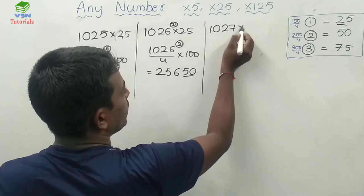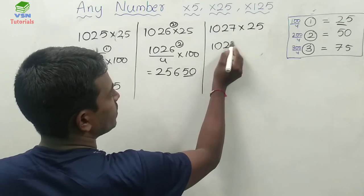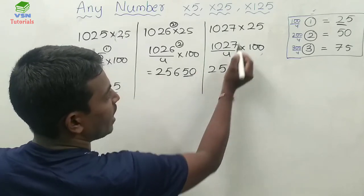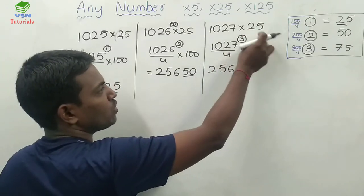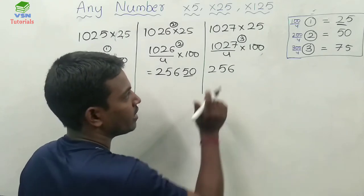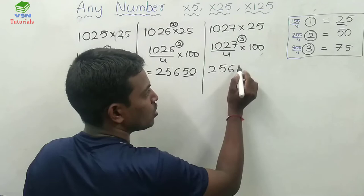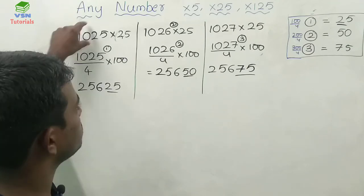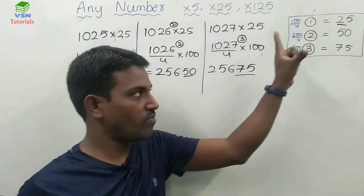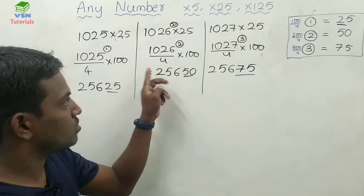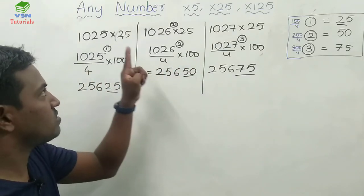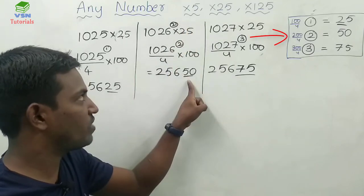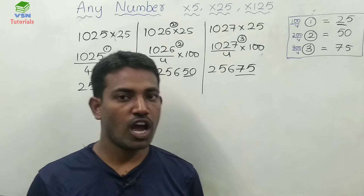Let me take 1027 into 25. That is 1027 divided by 4, multiplied by 100. Here, you get 256 with remainder 3. 3 into 100 is 300, and 300 divided by 4 is 75. So whenever you get remainder 3, you add 75 at the end. To summarize: if exactly divisible by 4, multiply by 100 directly. Remainder 1 → add 25. Remainder 2 → add 50. Remainder 3 → add 75. I hope you have understood.